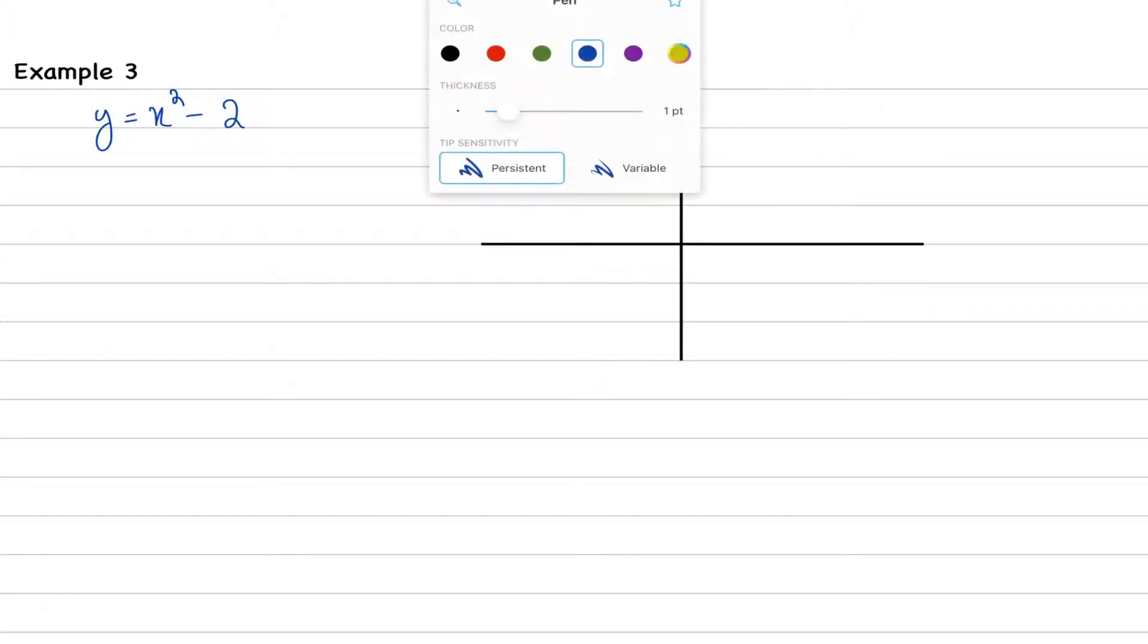And the same procedure, first of all, let's start the nature. Nature, as you can see, the coefficient of x squared is positive. So that means this curve, right away, is going to be a happy face.